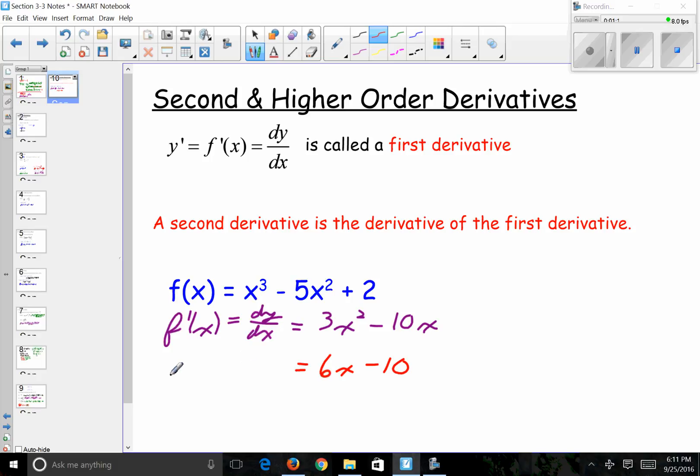But now if I take the derivative of this and get 6x minus 10, this is the second derivative. And the notation in prime notation is to just put another prime, and I would read that as f double prime. Or I can say the second derivative in Leibniz notation, the second derivative would be d squared y dx squared.